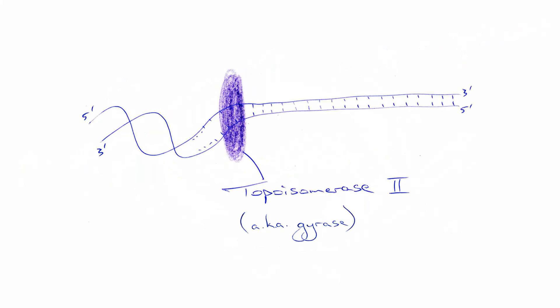At a certain point along the DNA molecule, the enzyme topoisomerase 2, also known as gyrase, unwinds the helical structure of the DNA. This point is called the origin of replication.